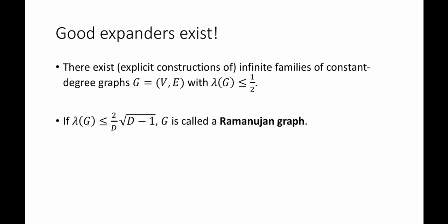It turns out that we can do this. In fact, good expanders exist. So here's a theorem. There exist explicit constructions of infinite families of constant degree graphs G that have expansion parameter less than or equal to a half. We're not going to prove this in class, but check out the lecture notes for some pointers.